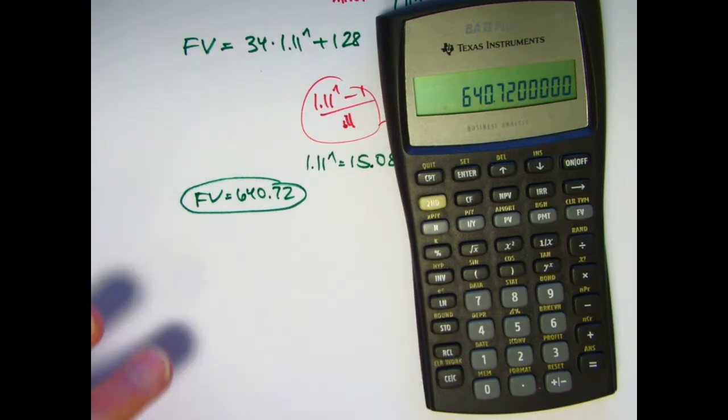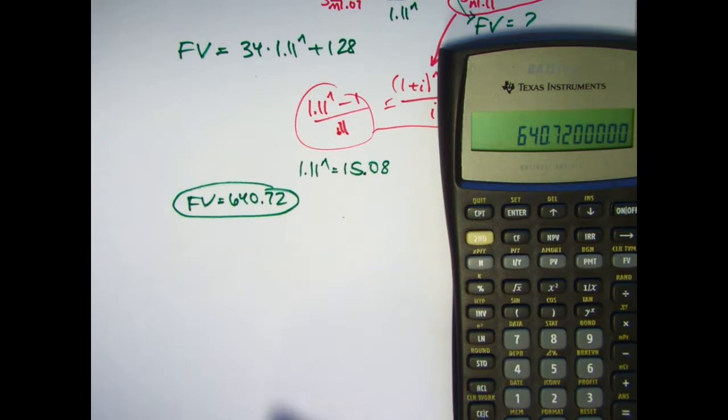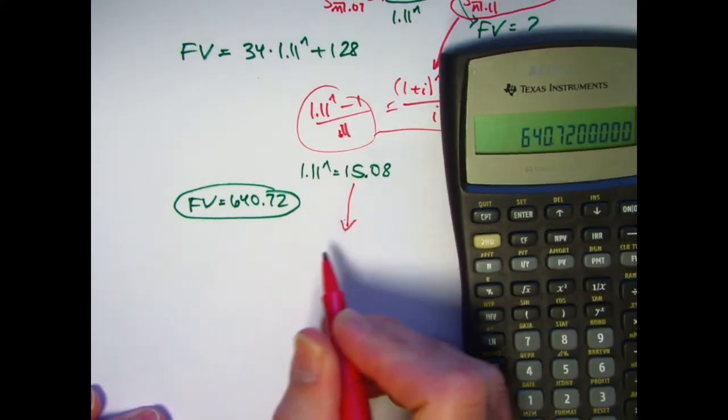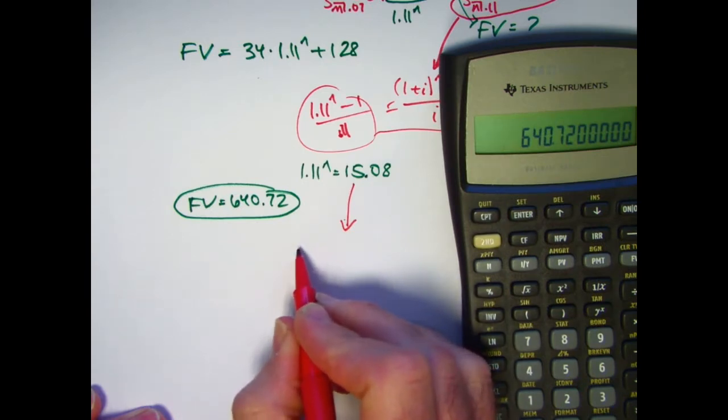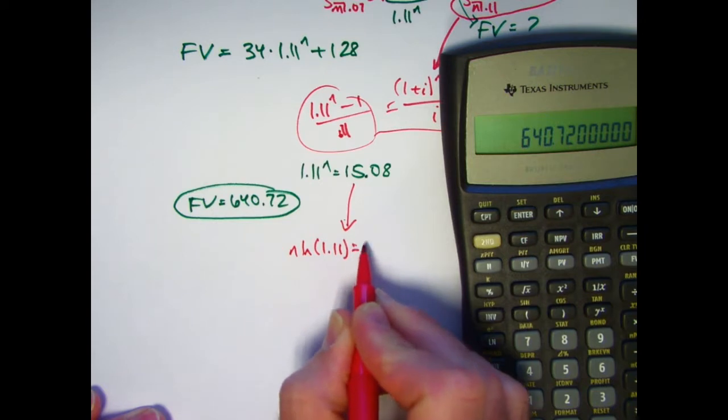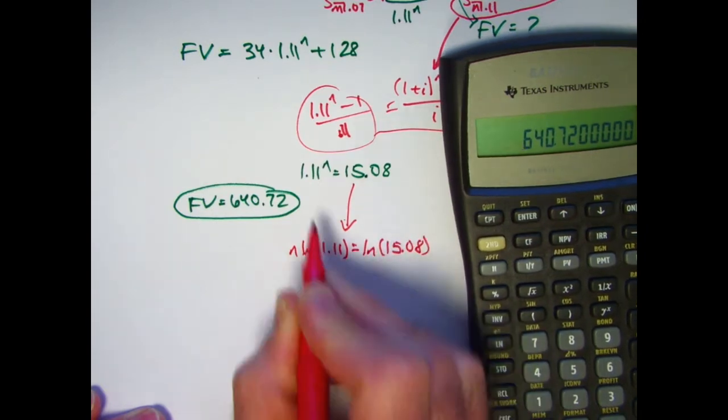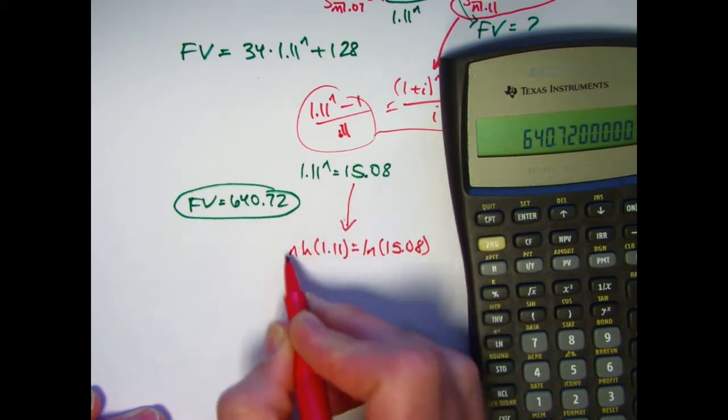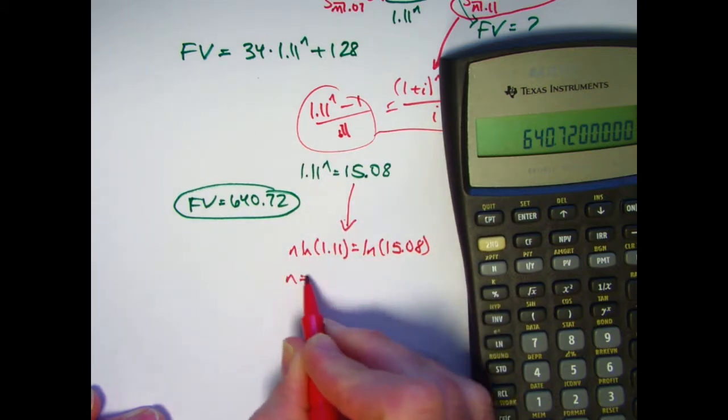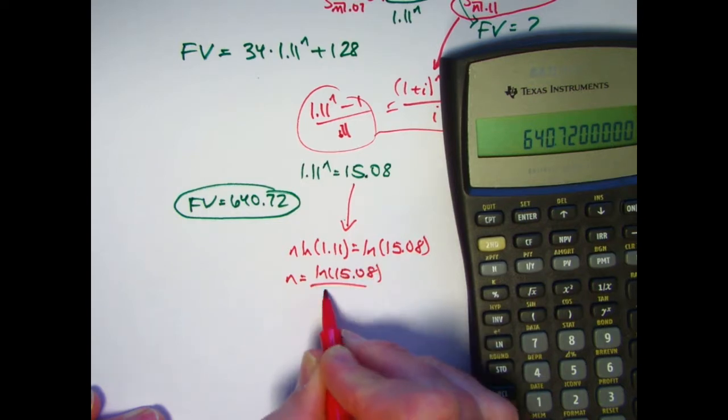All right. I'll just remind you how to solve for N an equation like this. Hopefully it's not too hard for you. You take the log of both sides, any log. It could be the common logarithm or the natural logarithm, though most people take the natural log. And I also use the property that when I take the natural log of 1.11 to the N power, the N can come out in front.